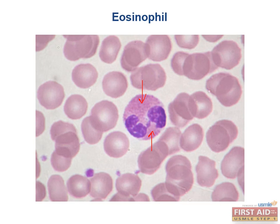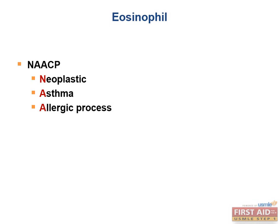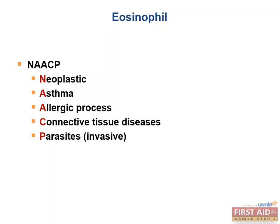Eosinophils normally make up 1-6% of leukocytes, but several disease states can cause eosinophilia. It may be helpful to remember the mnemonic NAACP for these diseases. This stands for neoplastic, asthma, allergic process, connective tissue disease, and parasites that are invasive.